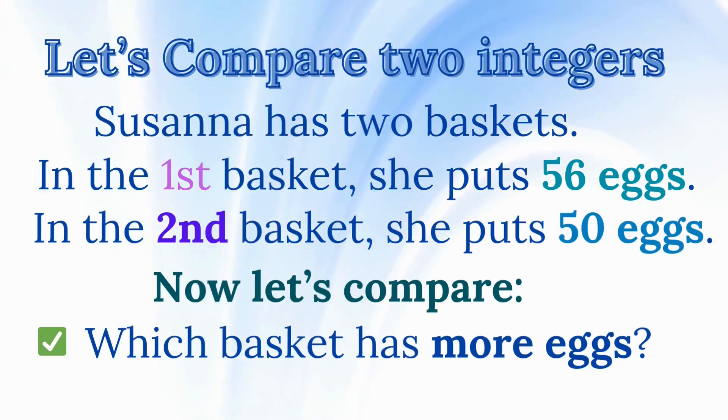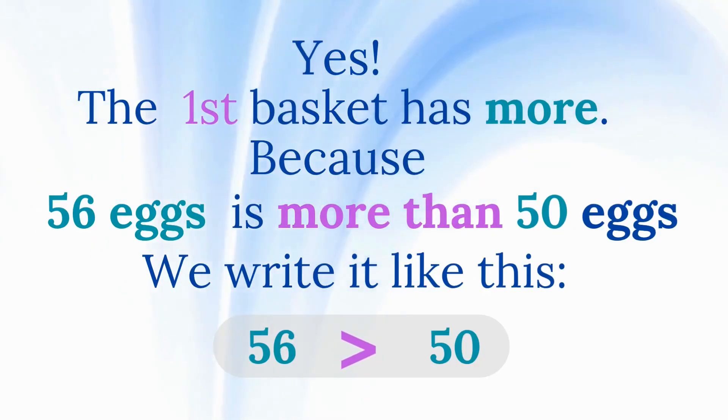Let's compare two integers together. Susanna has two baskets. In the first basket, she puts 56 golden eggs. In the second basket, she puts 50 golden eggs. Now let's compare. Which basket has more eggs? Yes. The first basket has more. Because 56 is greater than 50. We say 56 is greater than 50.